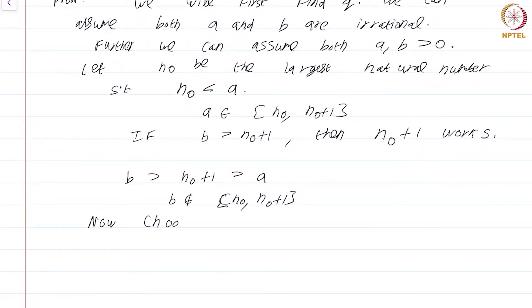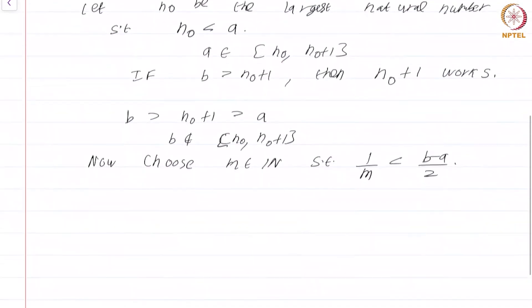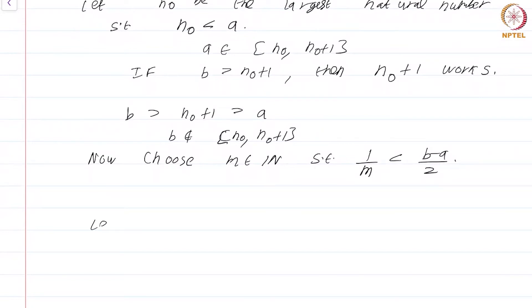Choose m in the natural numbers such that 1/m < (b-a)/2. And let k be the largest non-negative integer such that n₀ + k/m is less than a.